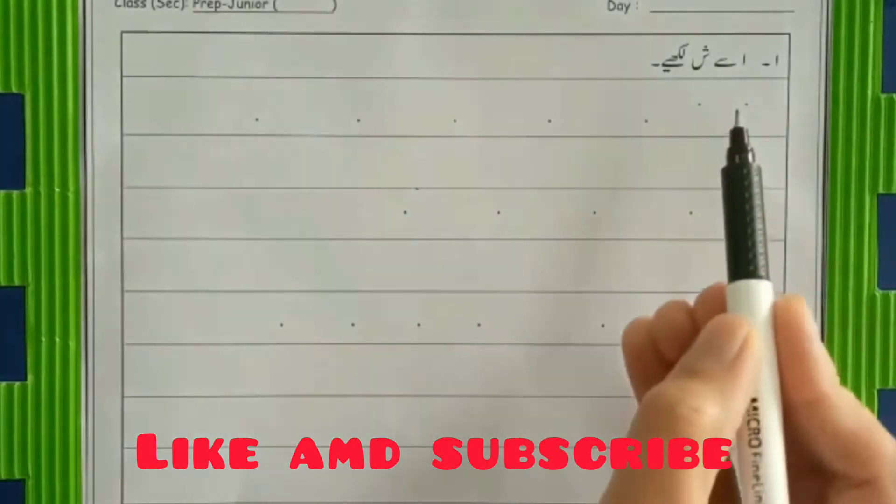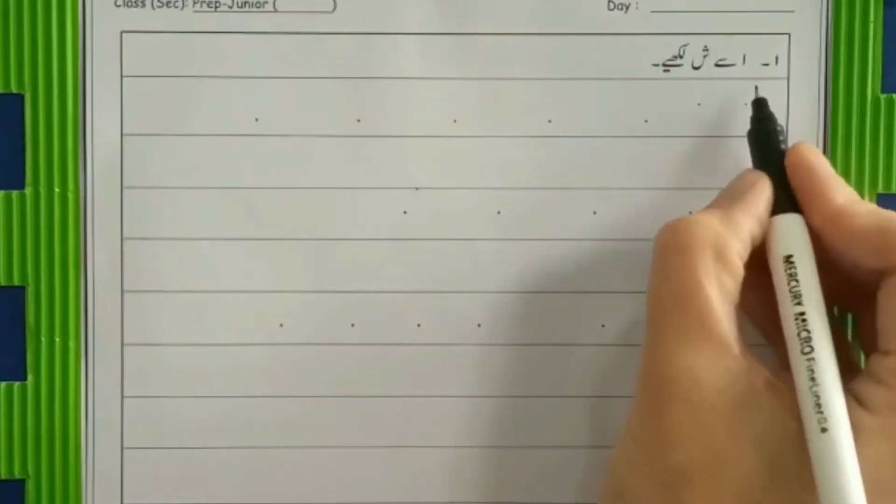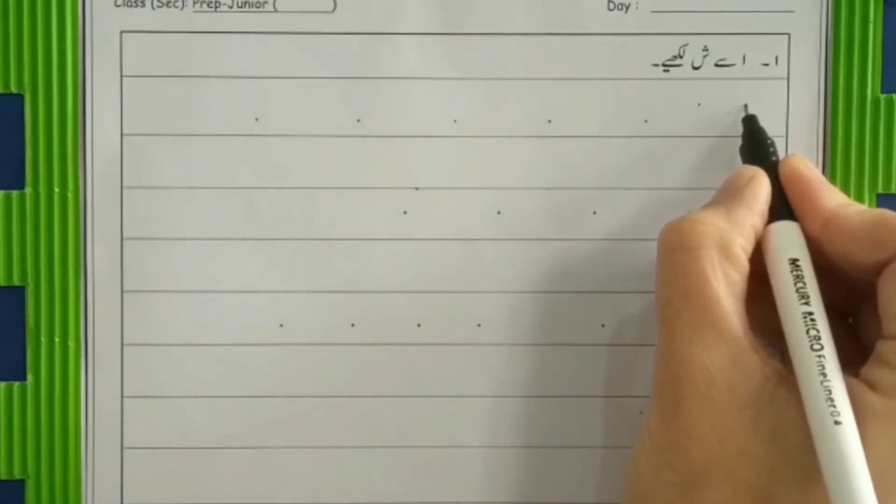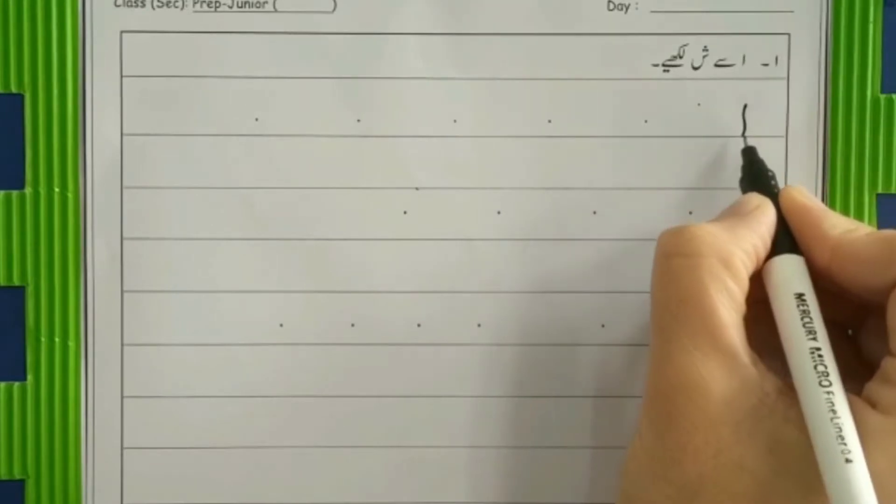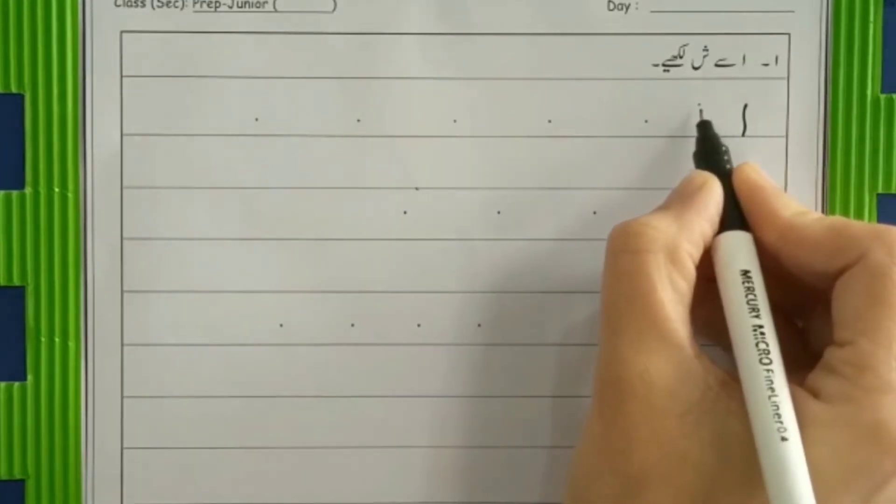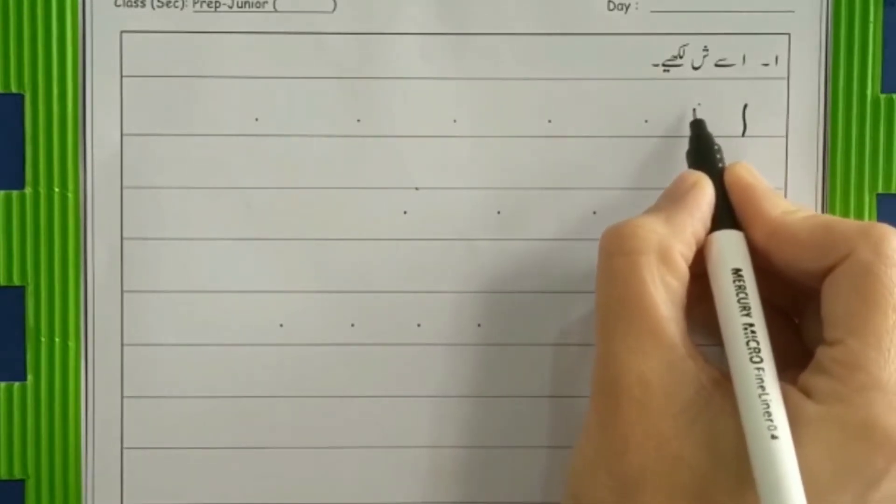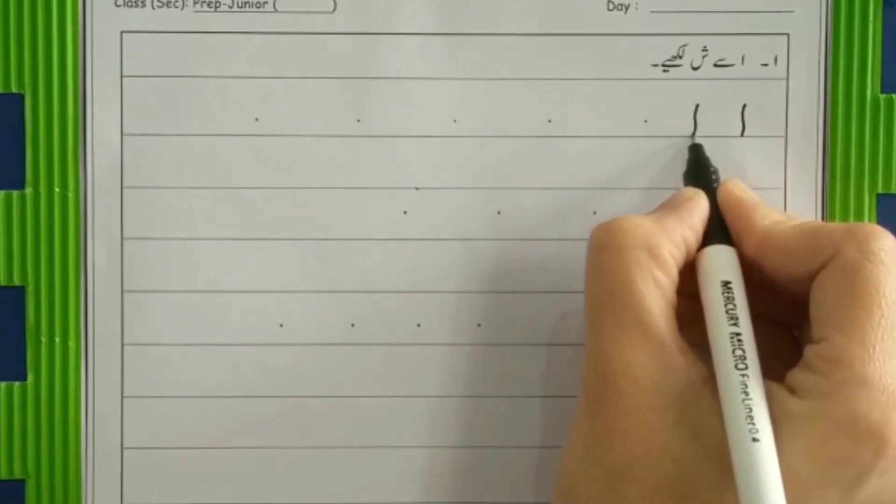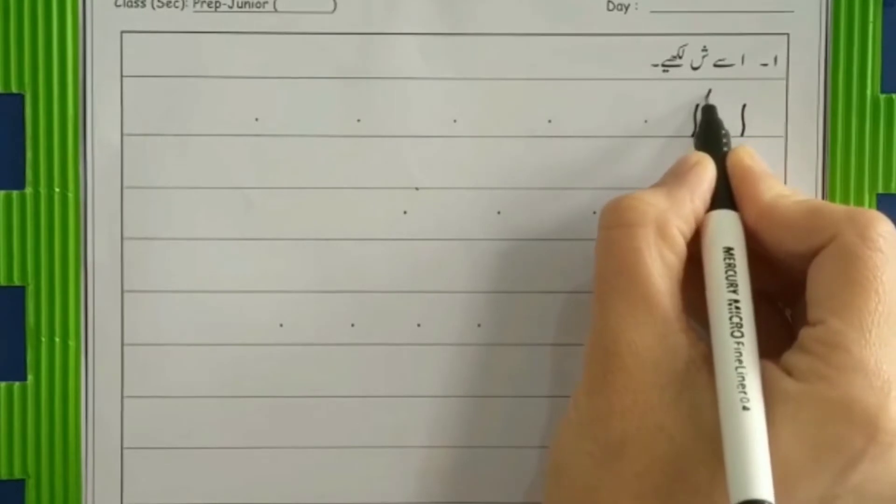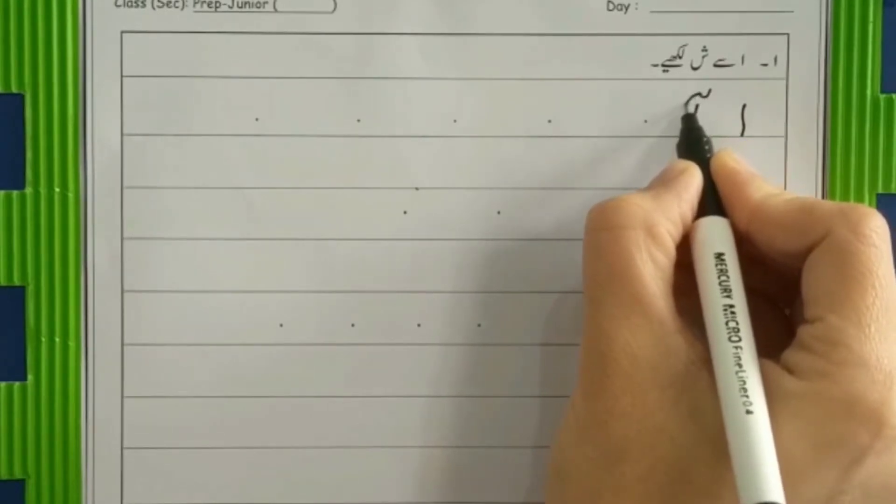Let's start. First half is alif. Pencil on the starting dot and make a curvy alif with me. Curvy alif. Now alif with dots. Again a curvy alif. And then calm down slant, go up and calm down slant.